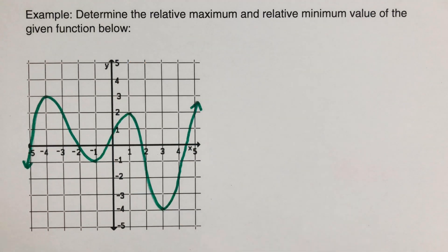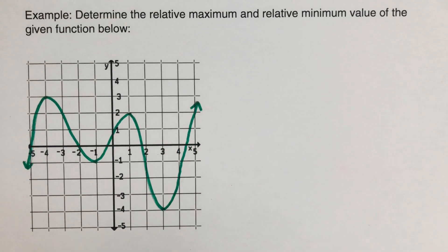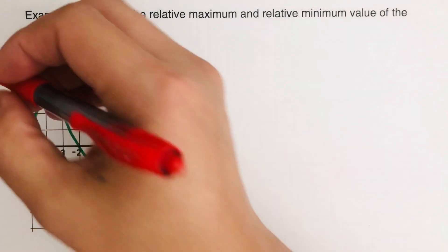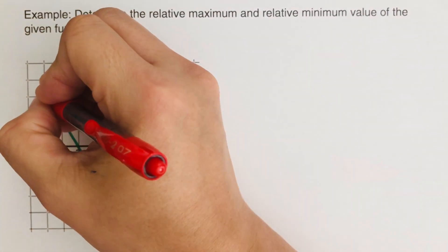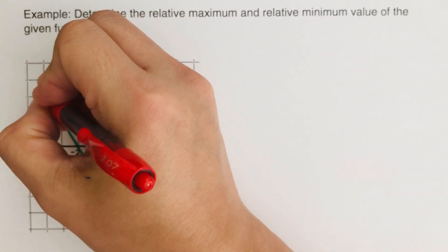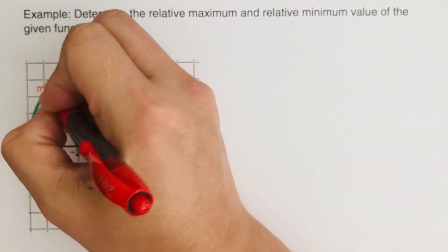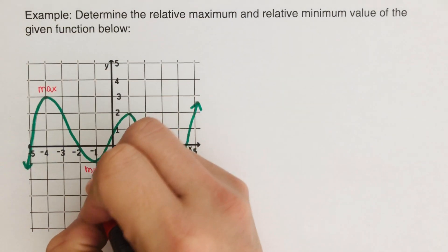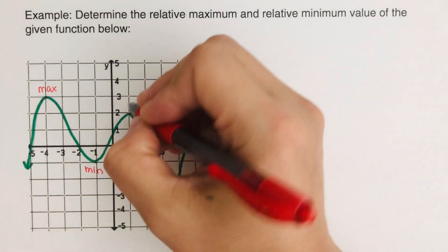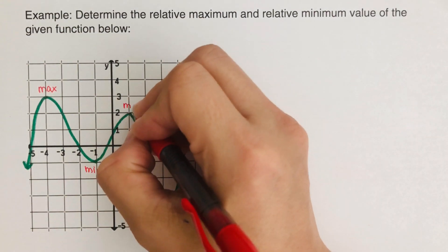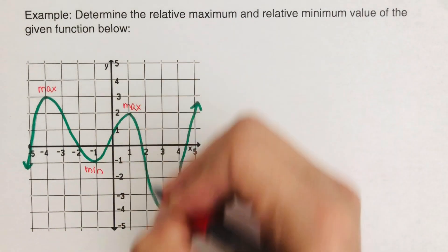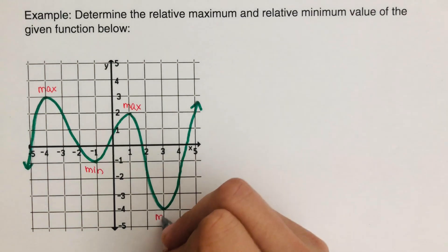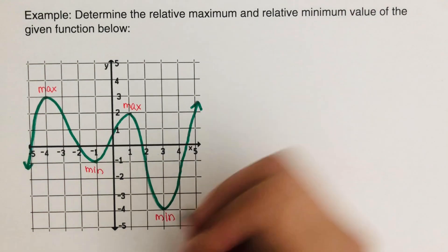From here, we can label the maximum and the minimum. So right here, this is a maximum, this is a minimum, this is a maximum, and this is a minimum.